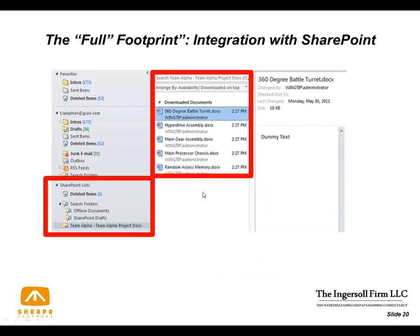There could be a significant amount of data being synchronized and put into a PST file that has nothing to do with the regular ebb and flow of email. This Outlook client screenshot shows SharePoint lists synchronized down — for example, Team Alpha project docs — where documents are sitting on the user's hard drive in a PST file. If you work on a document and forget to synchronize back up to the SharePoint server, you may have two different versions of that document, raising discovery and records implications.